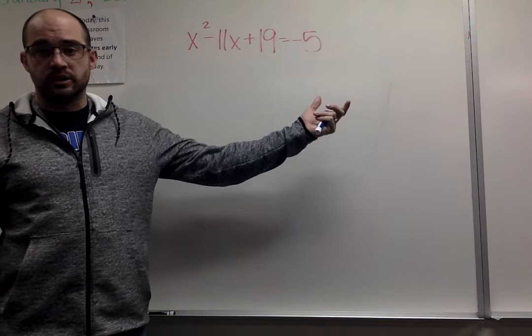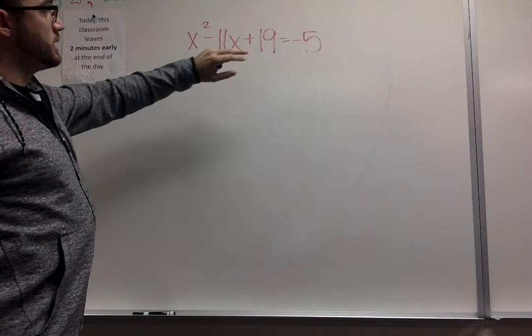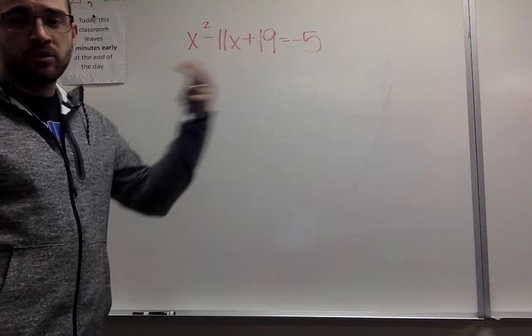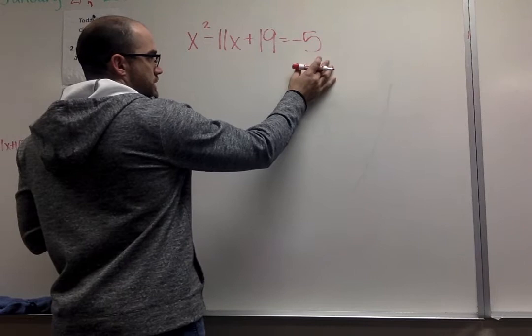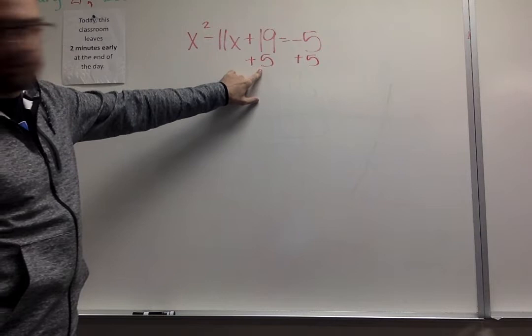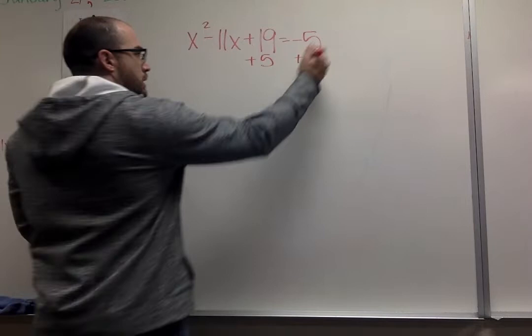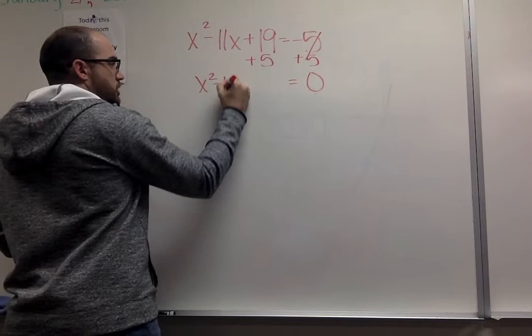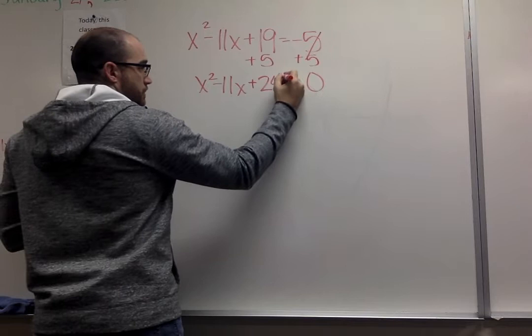In this problem, I've got my x squared minus 11x plus 19. Over here, I don't have a 0. So for me to fix this, I want to move that 5 over to the left. I want to move it over here and get a 0 on the right side. Right now, it's a negative 5, so the opposite would be to add 5. I'm combining it with its like term. This would give me a 0 on that side. Over here now, my new problem, nothing else changed except for the 19 plus 5 gives me the 24.